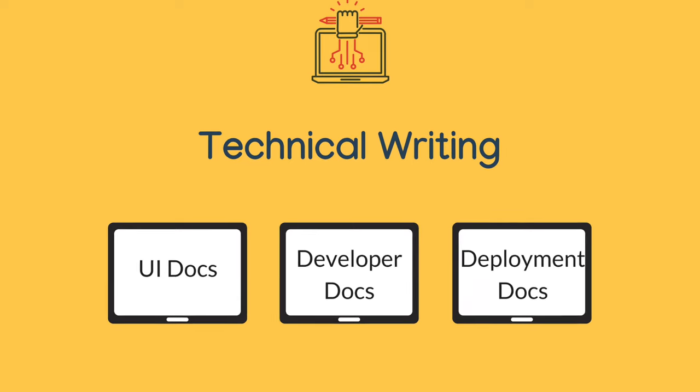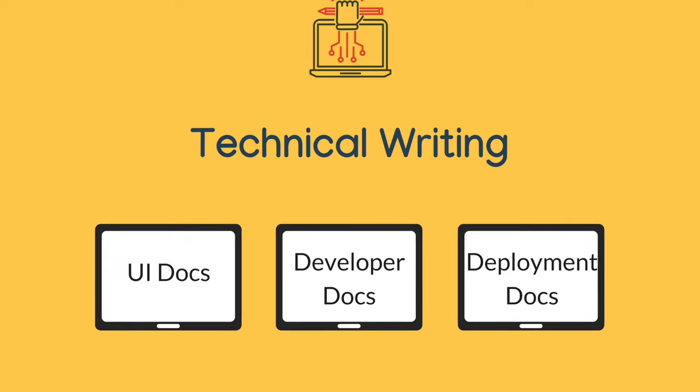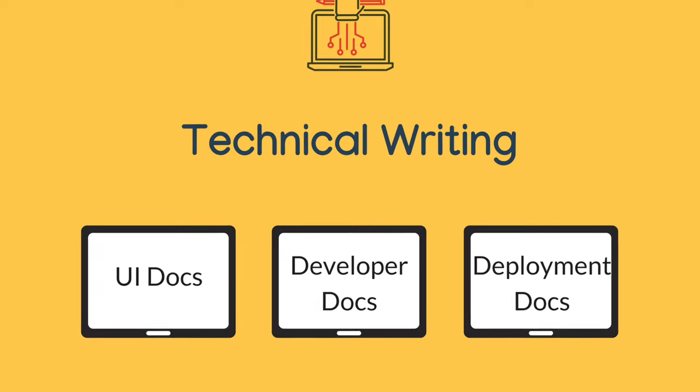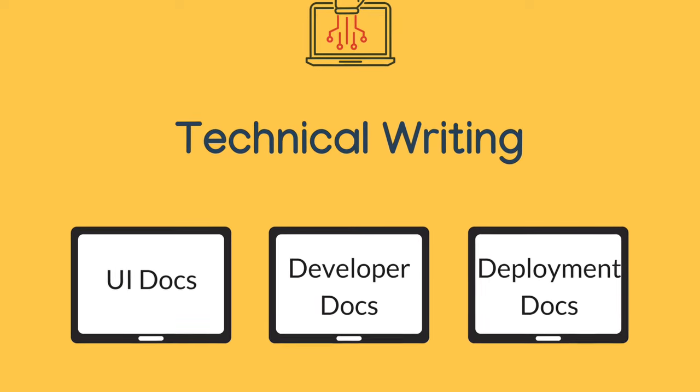So to recap, technical writers in the software industry work on three types of documents: UI-based docs, developer docs, and deployment docs. As a technical writer, you might end up working on only one of these or all of them.